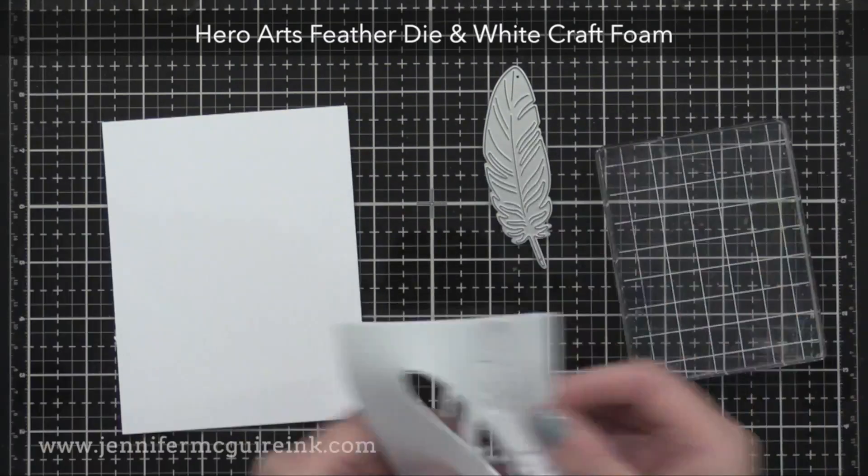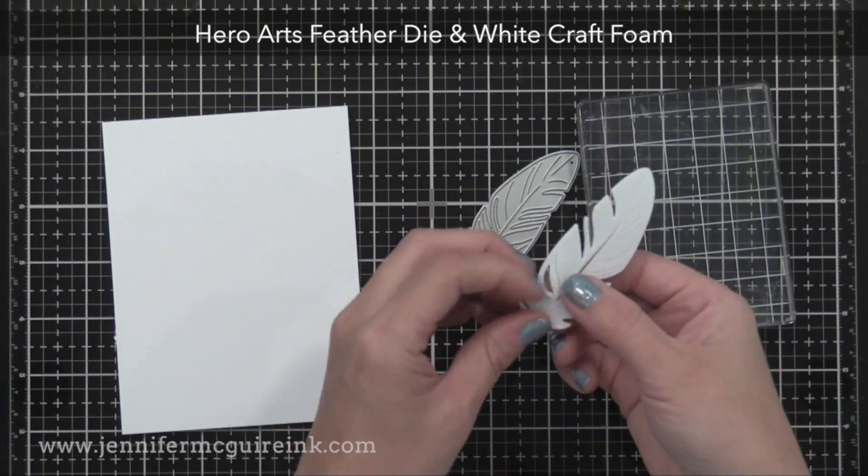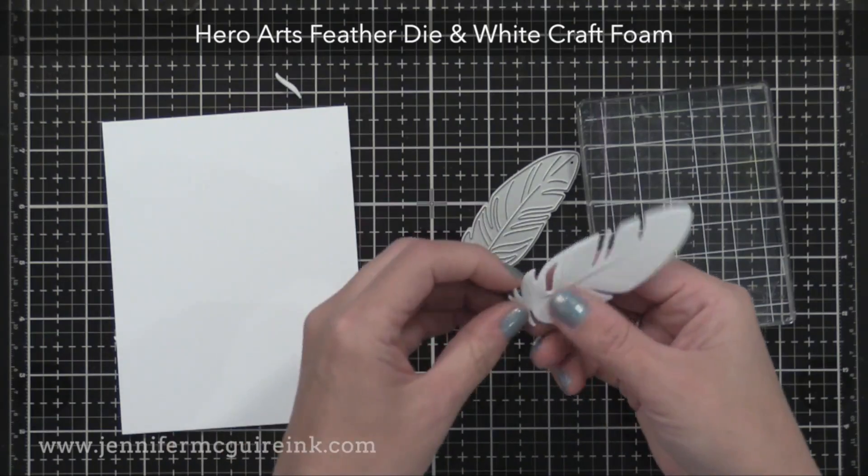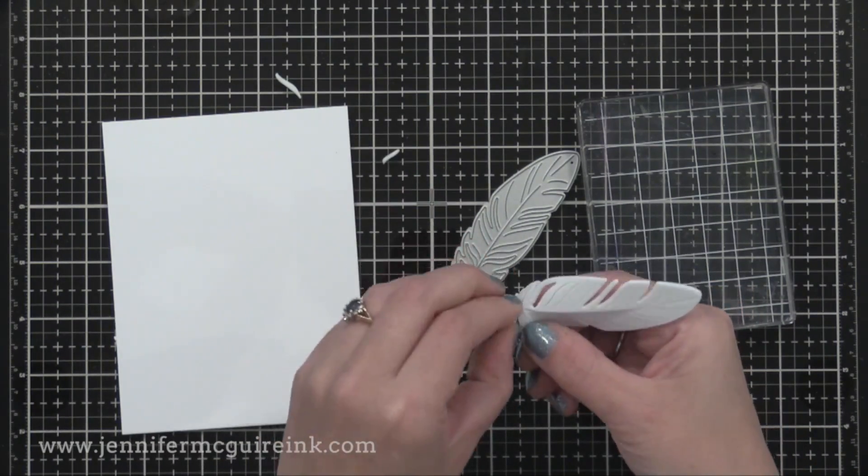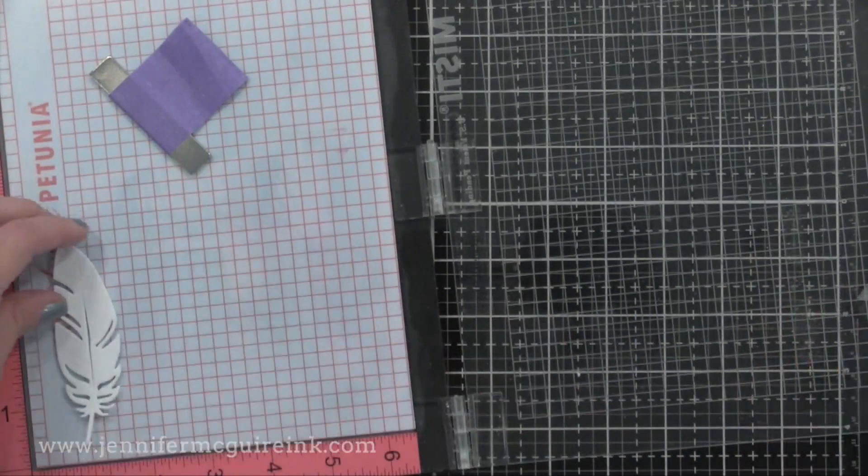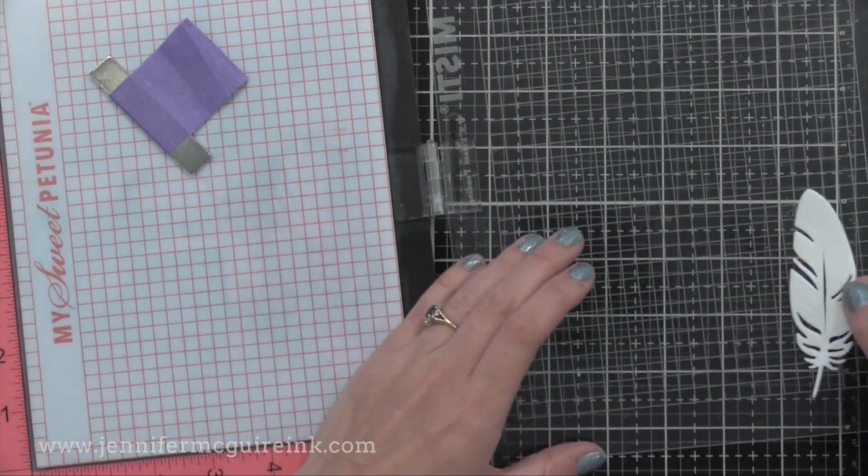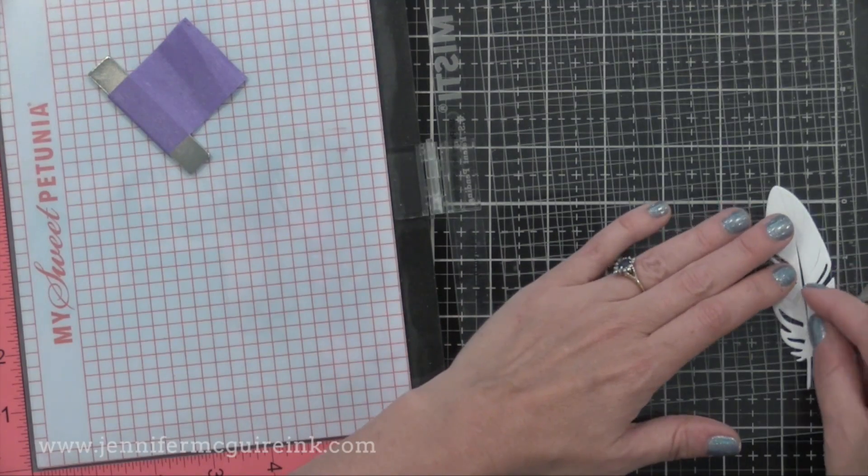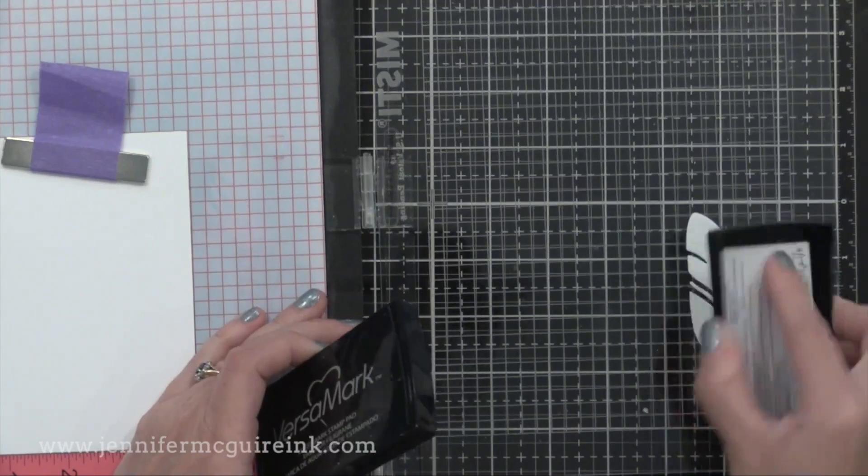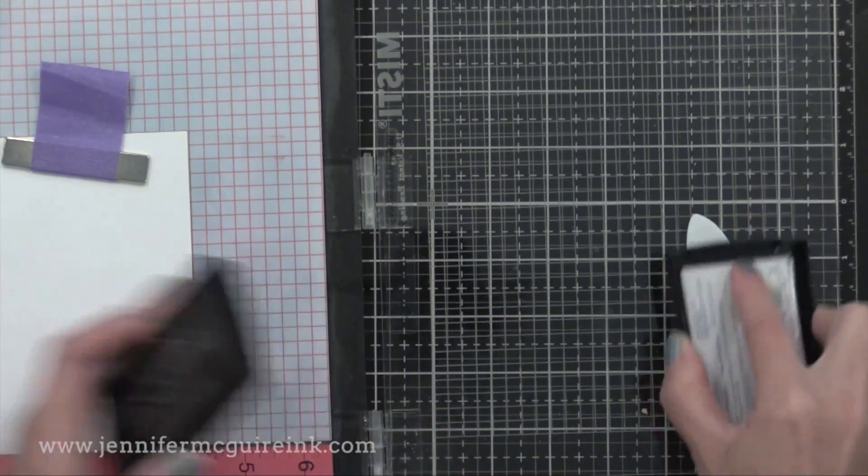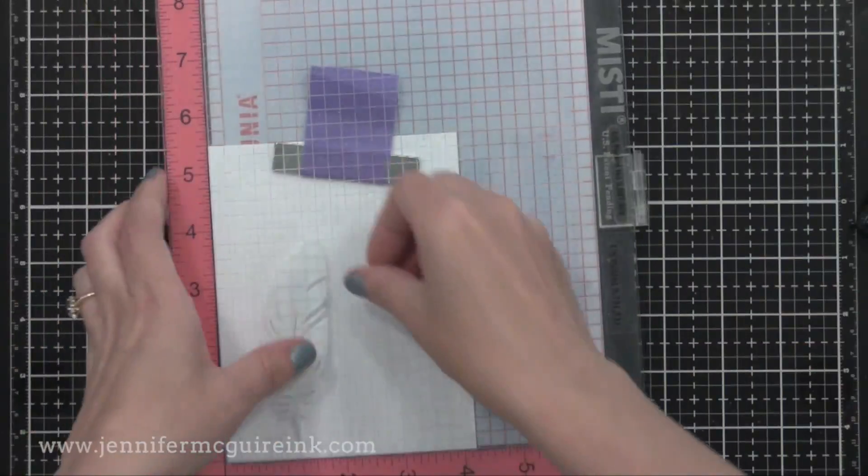So I have this Hero Arts Feather die that I die cut from white craft foam. I'll go ahead and tear a few of the feathers off, just to have some openings on my stamped image. And then I will temporarily adhere that foam die cut into my MISTI. You can use an acrylic block instead. So I'm going to actually stamp with this die cut.